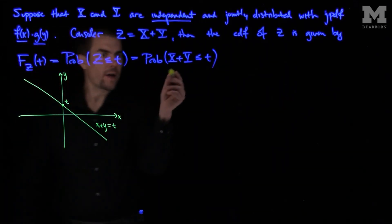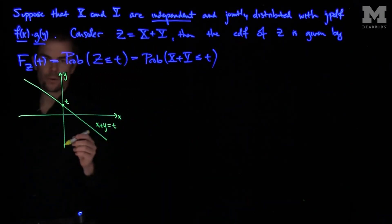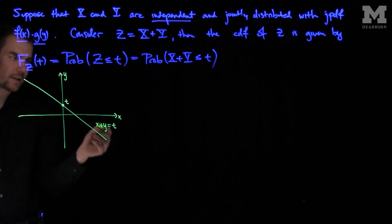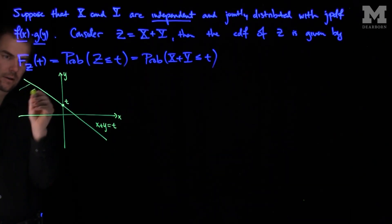And now we know that X plus Y is less than or equal to t. So what's our region of integration? Our region of integration is X plus Y less than t, which is this area right down over here.